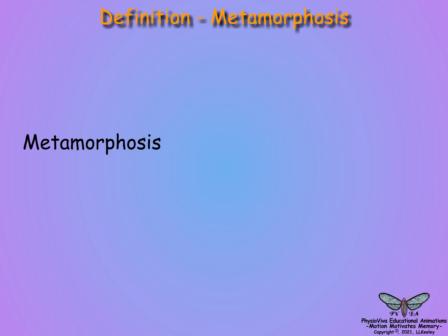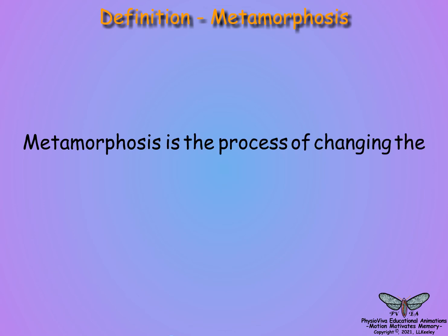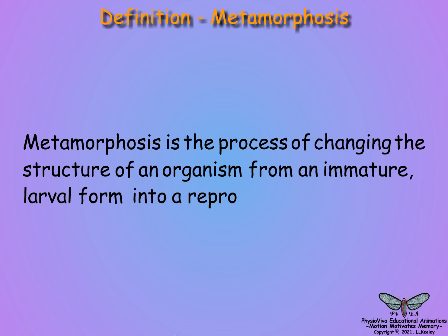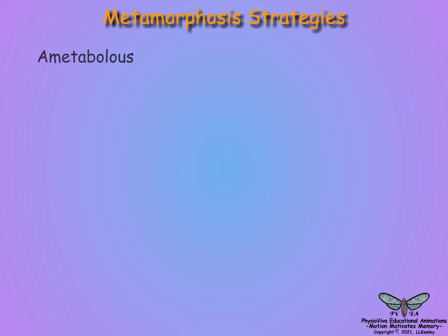Metamorphosis is the process of changing the structure of an organism from an immature larval form into a reproductive adult form. Insects have three strategies for metamorphosis: ametabolus, hemimetabolus, and holometabolus.